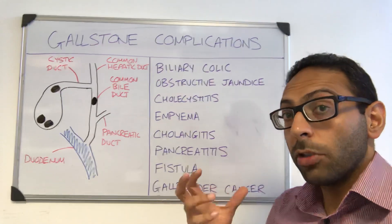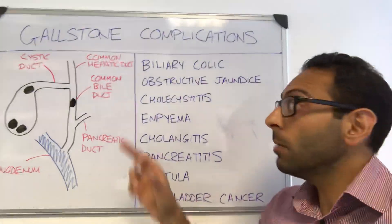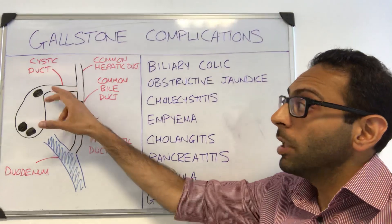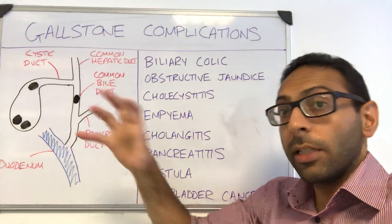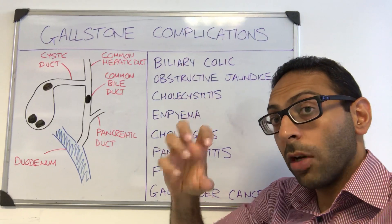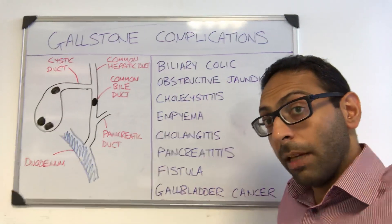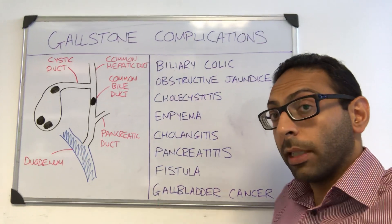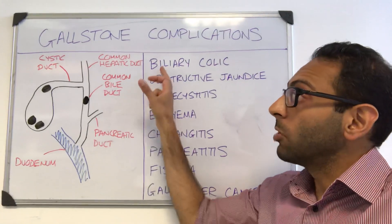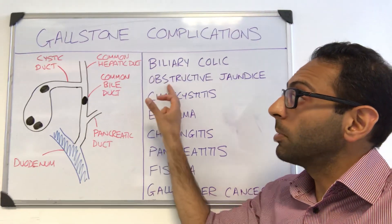So what can happen due to gallstones? Number one: biliary colic. This is when you get blockage of one of the ducts and you get contraction around that stone, causing severe pain in your right upper quadrant. It can come and go, can be episodic — that's your biliary colic.